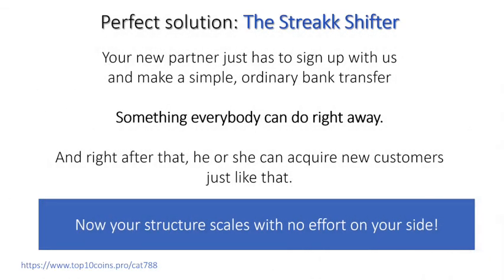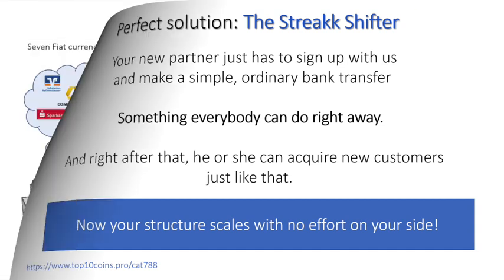But wait, we have the perfect solution for you: the Streak Shifter. Imagine all that's required is an ordinary bank transfer — everything else is done automatically. The euros or dollars will be exchanged into the selected cryptocurrency and then sent to the provided wallet address. Once you or your friend signed up and the Streak Shifter account is set up and active, all that's left to do is to make the bank transfer, something anybody can do, and something that is so easy anybody can explain how to do to anybody else in one minute.